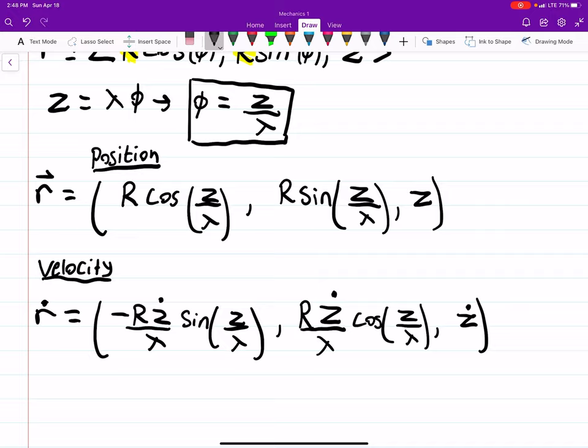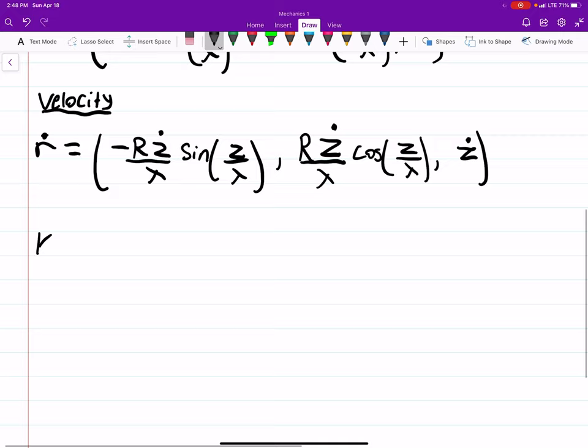So now that we have our velocity, we can find our kinetic energy. The kinetic energy T is just one half mv squared. Now that we know what the velocity is, we can plug that in. So we get R squared z dot squared over lambda squared.